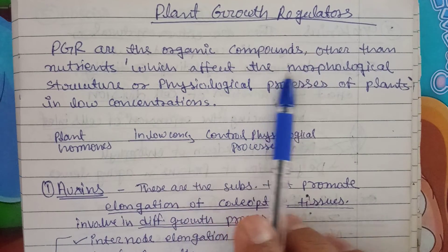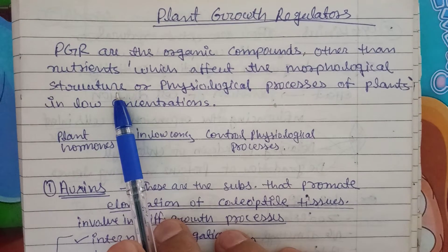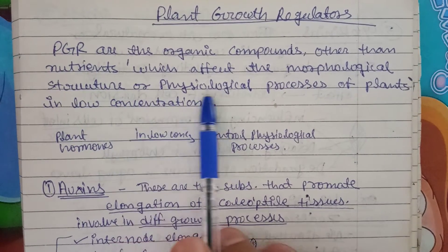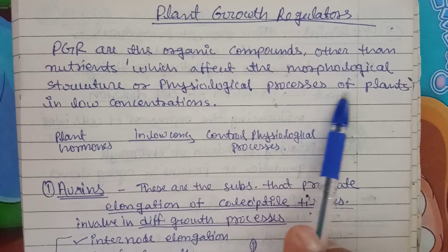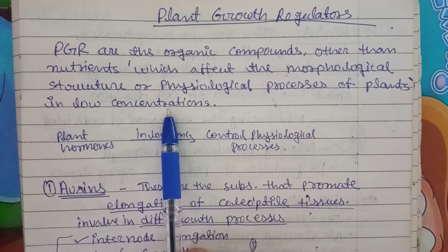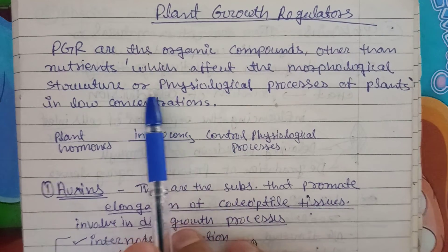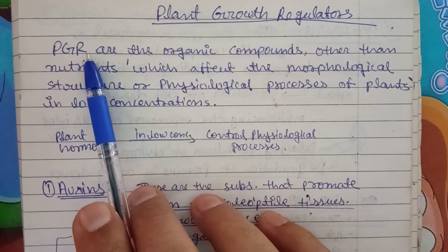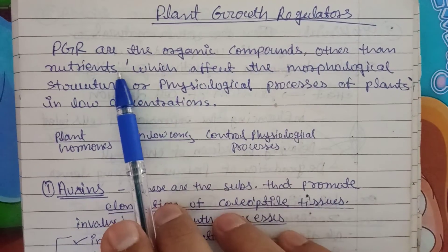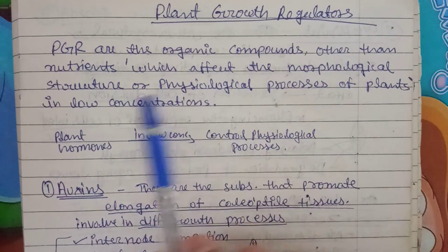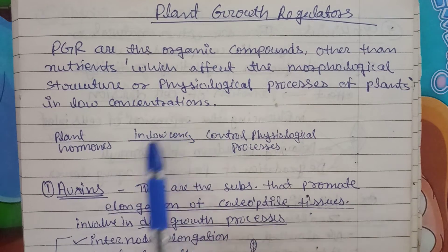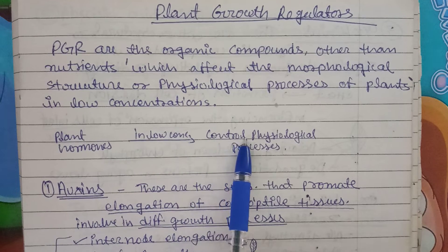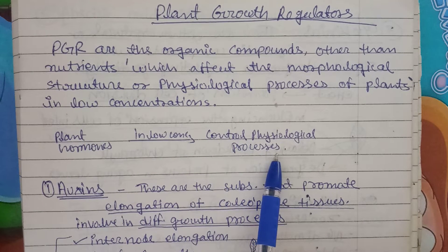Plant growth regulators affect the morphological structure — like maybe root, stem, fruit — how the plant will grow, and the physiological process also. Whatever the physiological process, it goes on into the production of secondary metabolites, primary metabolites, and all those things of plant, in low concentration. So overall, how we can define it: plant growth regulators or PGR are the organic compounds, other than nutrients, which affect the morphological structure and physiological process of plant in low concentration. So plant hormones in low concentration control the physiological process.